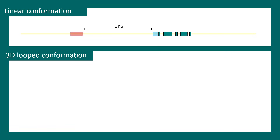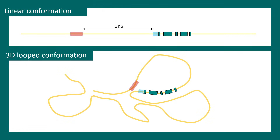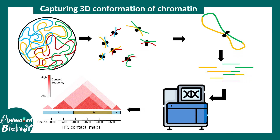These topologically associated domains enable fine-tuned regulation of transcription. For example, in a linear configuration a promoter may be 3 kbp away from an enhancer, but a looping event brings that enhancer close to the promoter, allowing RNA polymerase and specific transcription factors to be recruited and interact with each other to give rise to transcription. This is why the concept of 3D chromatin is really important.